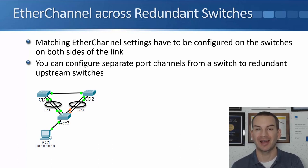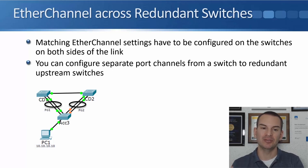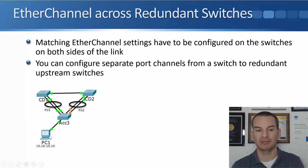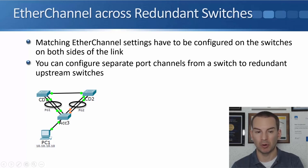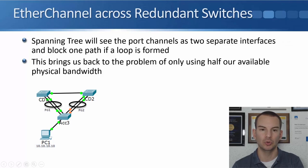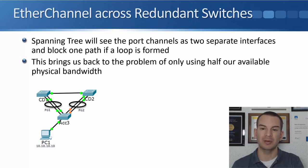Matching EtherChannel settings have to be configured on the switches on both sides of the link. You can configure separate port channels from a switch to redundant upstream switches. As you see in the diagram, the access layer switch — Access 3 — has a port channel with bundled links going up to CD1, and another separate port channel with bundled physical interfaces going up to CD2.